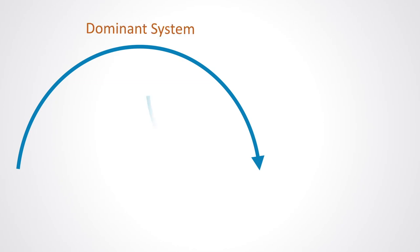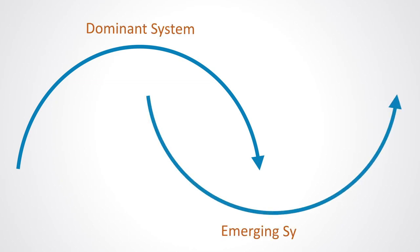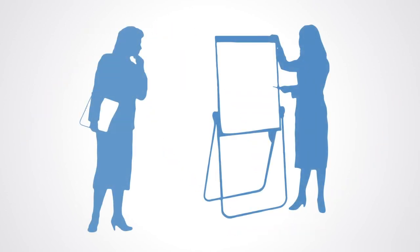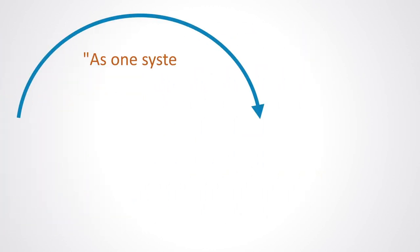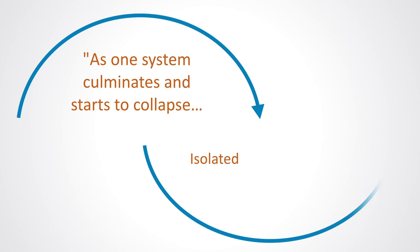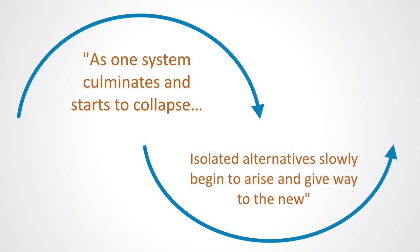The two-loops theory of organizational change is a model of change that tries to describe non-linear emergent processes of change within complex organizations. It is a model inspired by looking at the growth and decline cycle of living systems. Margaret Wheatley and Deborah Fries from the Burkana Institute first pointed to this model in their paper entitled 'Using Emergence to Take Social Innovation to Scale.' Fries and Wheatley demonstrated a key dynamic at the heart of every organization transformation: how, as one system culminates and starts to collapse, isolated alternatives slowly begin to arise and give way to the new.